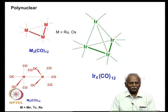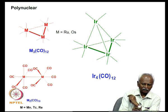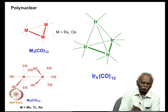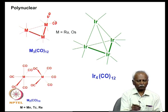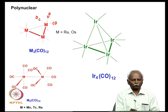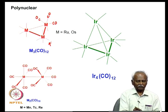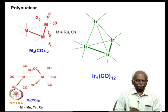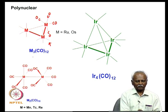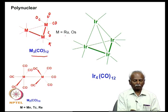In these polynuclear complexes, the carbon monoxides are indicated by straight lines. For example, each line drawn represents a carbon monoxide, and each metal centre has 4 carbon monoxides, forming an M3(CO)12 complex. This is very common for transition metals. In the case of ruthenium and osmium, you can form a system where a metal-metal bond supports the formation of a trimeric species.